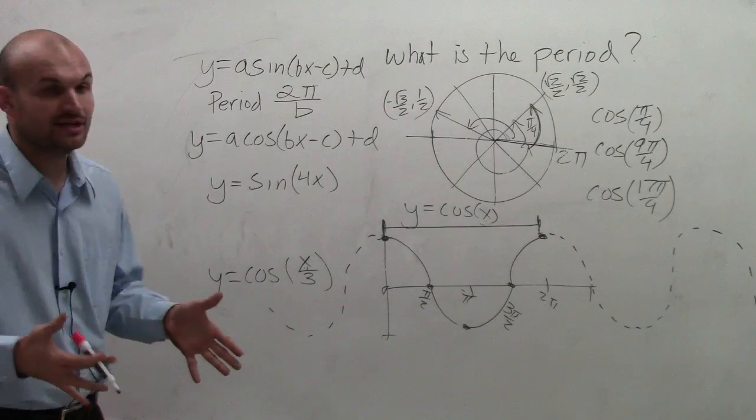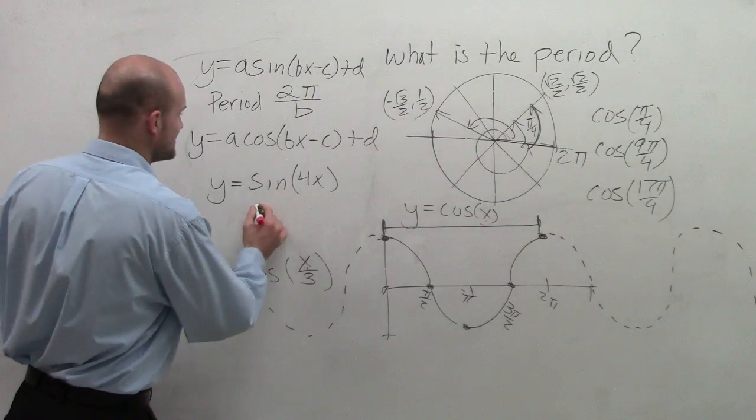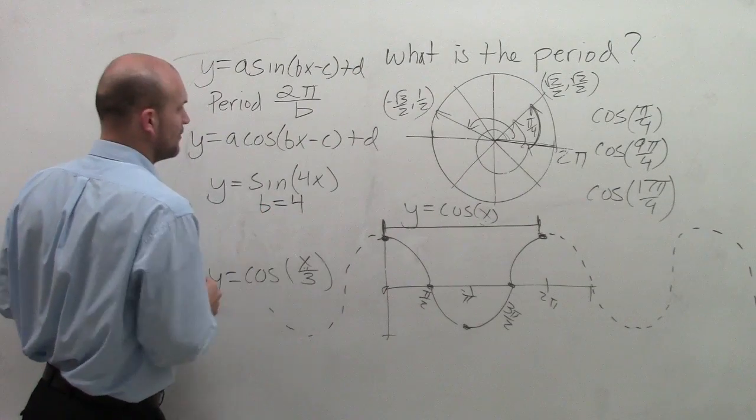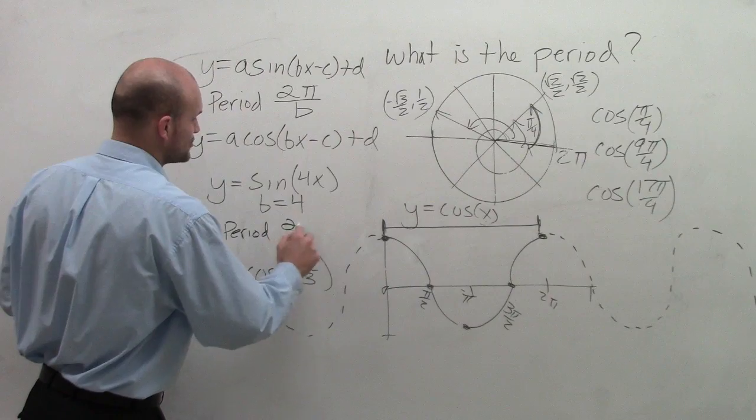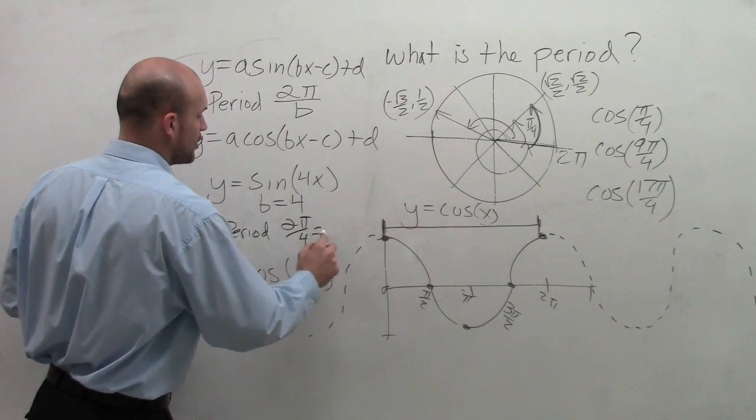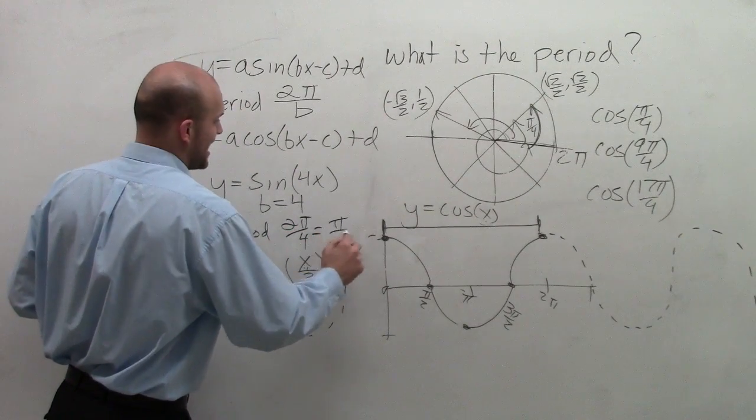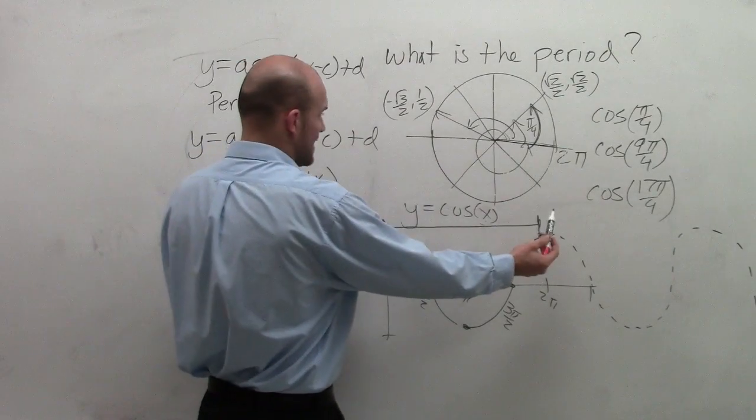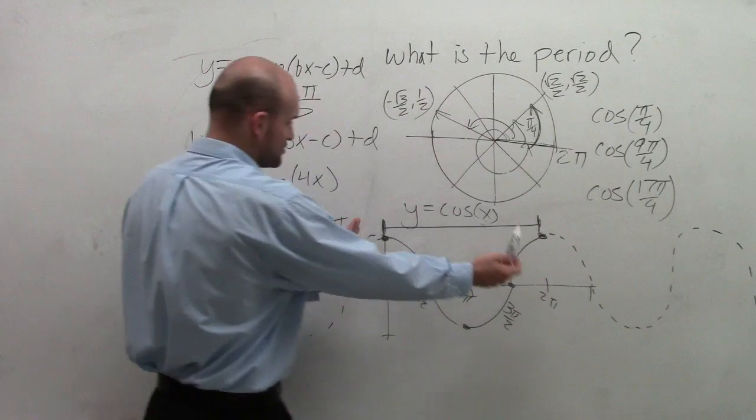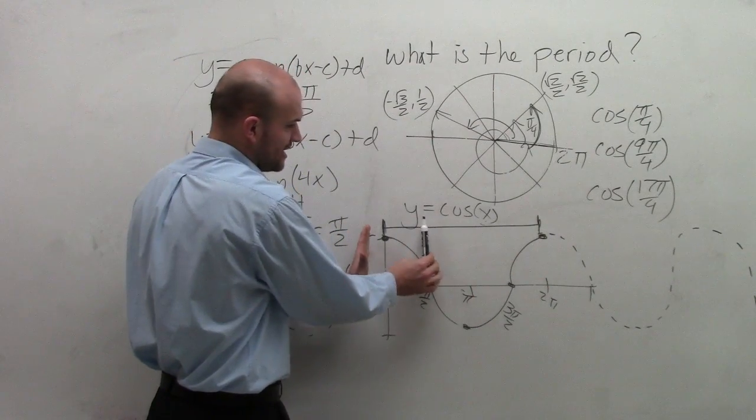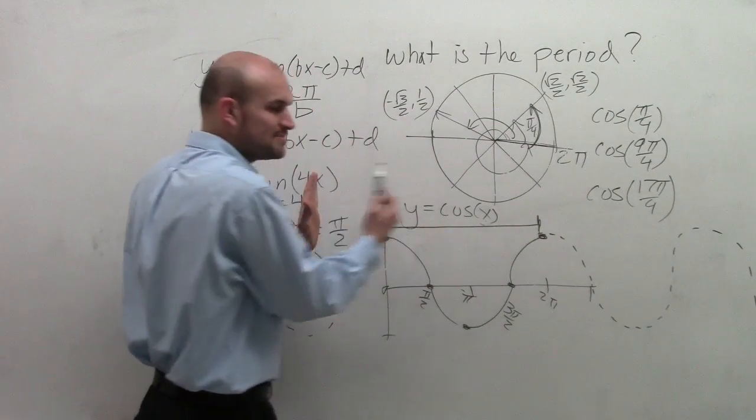OK, so in this case, what we need to do is we need to determine what b is in each instance. So in this case, we have a value of b which equals 4. So therefore, my period is going to be 2 pi divided by 4, which equals pi halves. So that means rather than the distance of my graph completing a cycle at 2 pi, now my graph is going to complete a cycle in the distance of pi halves. So you can see it's been shrunk.